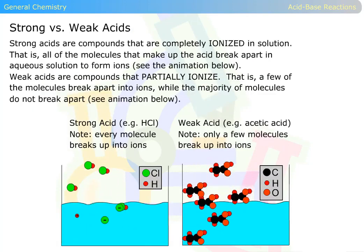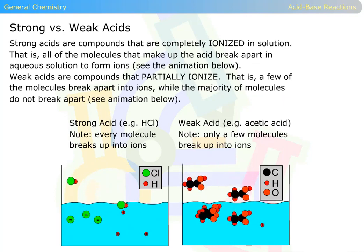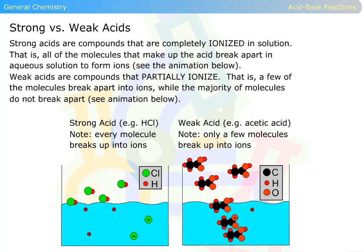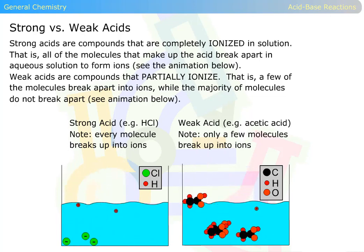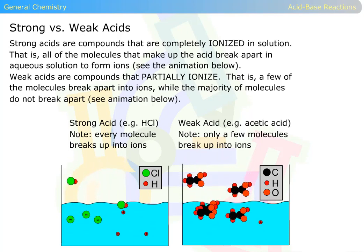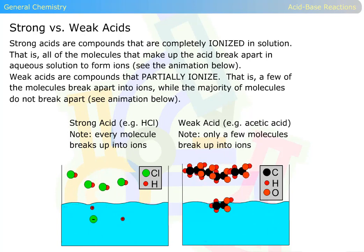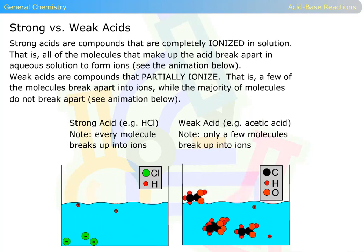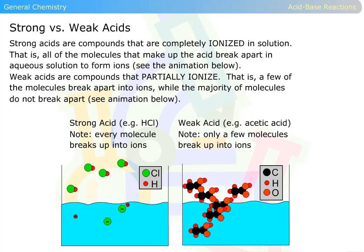Strong versus weak acids. Strong acids are compounds that are completely ionized in solution. That is, all of the molecules that make up the acid break apart in aqueous solution to form ions. Weak acids are compounds that partially ionize. That is, a few of the molecules break apart into ions, while the majority of molecules do not break apart.